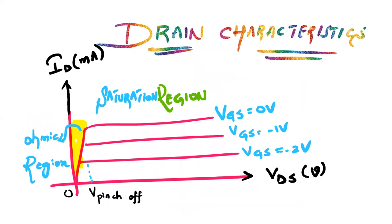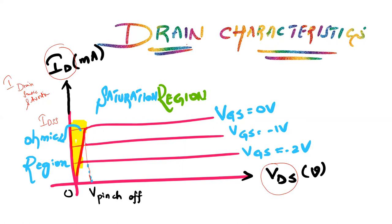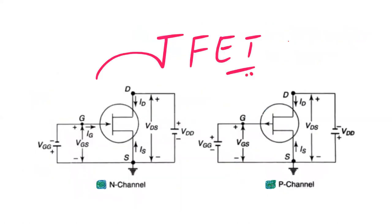Looking at JFET characteristics: when VGS equals zero, the drain current is called IDSS, which stands for Drain-Source Saturation Current. When a negative voltage is applied, there is a drop in drain current. The yellow-shaped region is called the ohmic region, the central region is the saturation region, and the voltage at which the channel pinches off is called the pinch-off voltage. These drain current versus drain-source voltage characteristics are called drain characteristics for JFET.